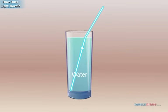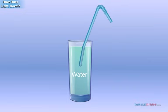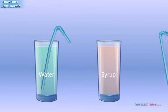Have you ever noticed that when you put a straight straw into a glass of water, it looks like the straw is bent? That's the result of refraction. A thicker liquid, like syrup, bends the light even more.